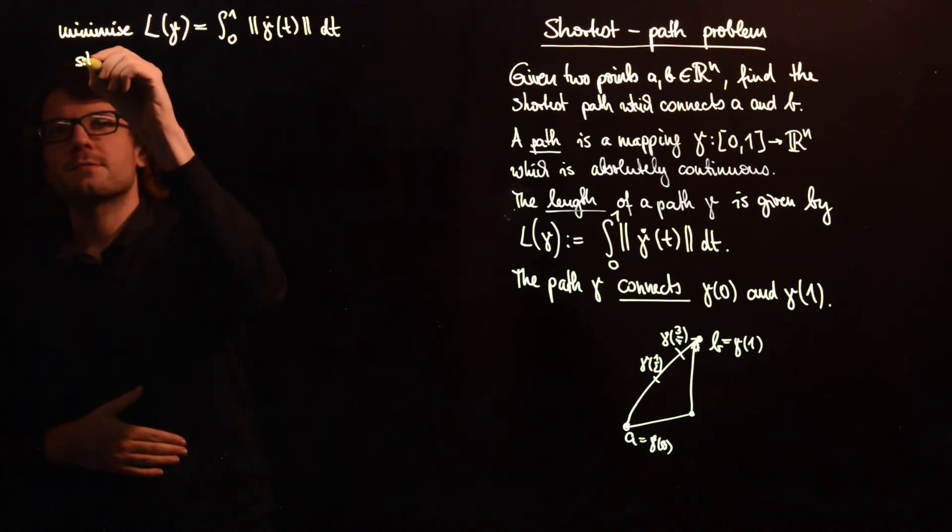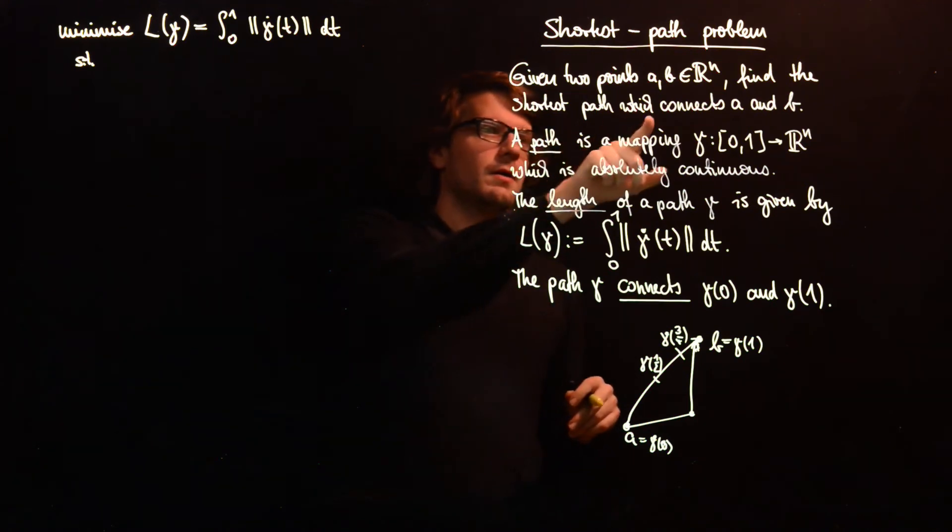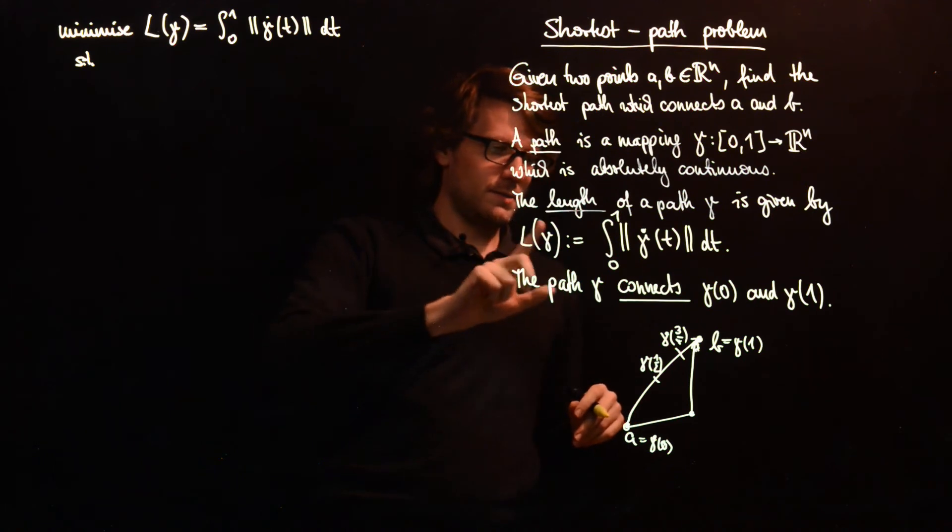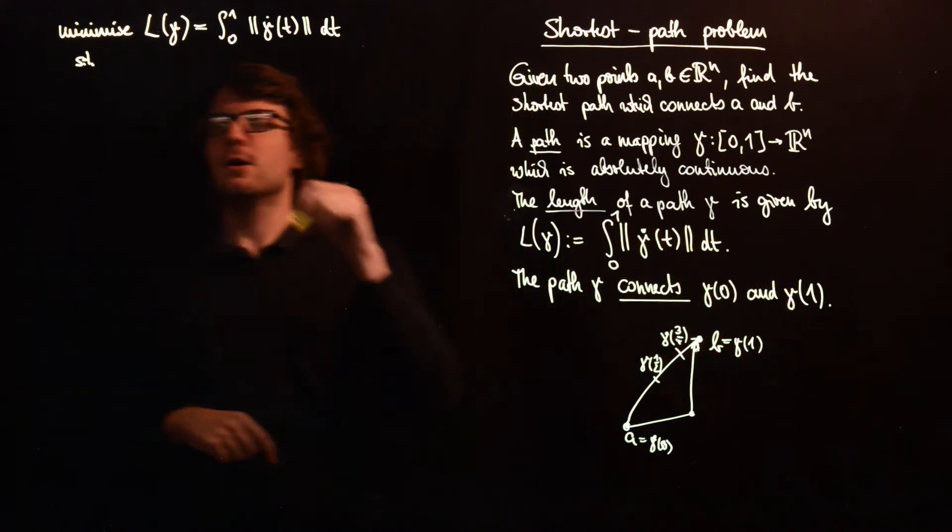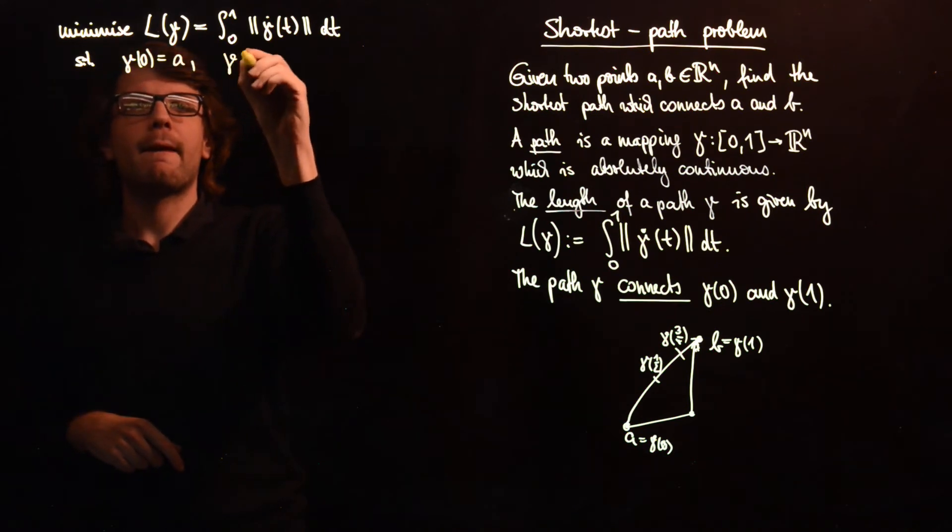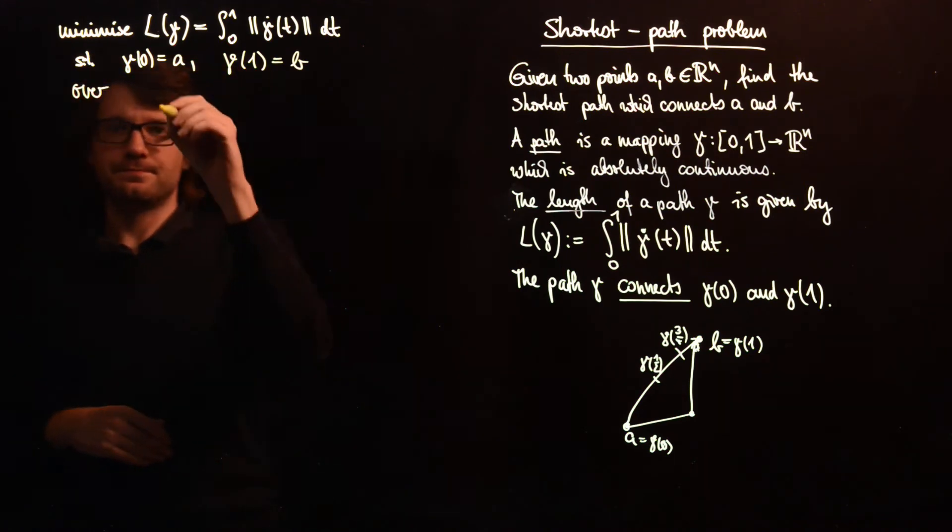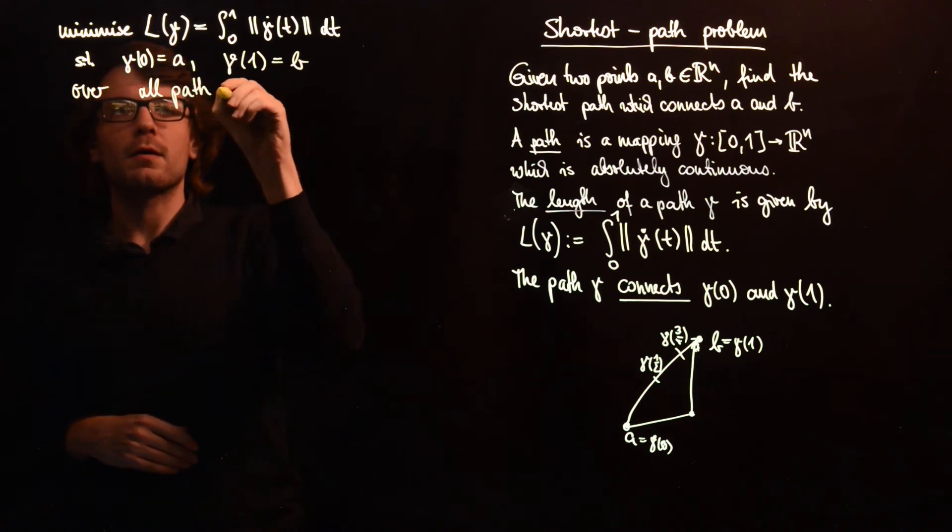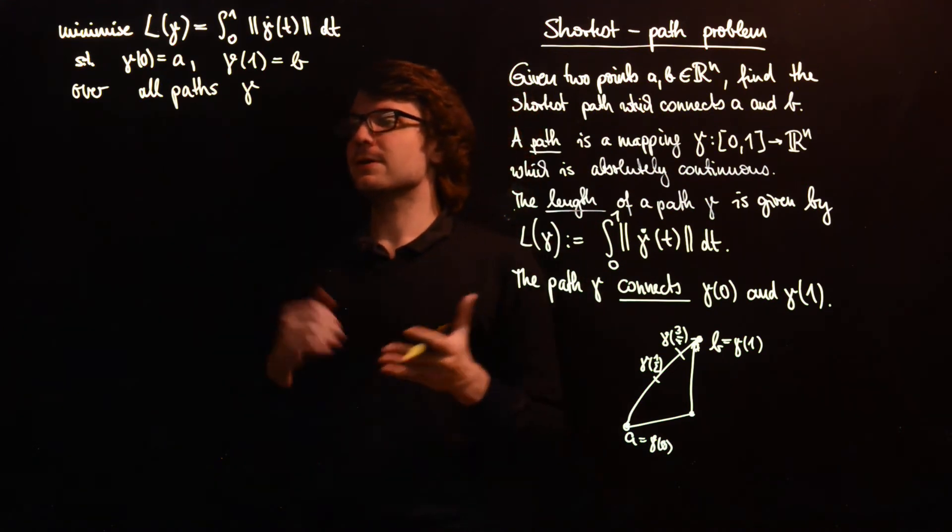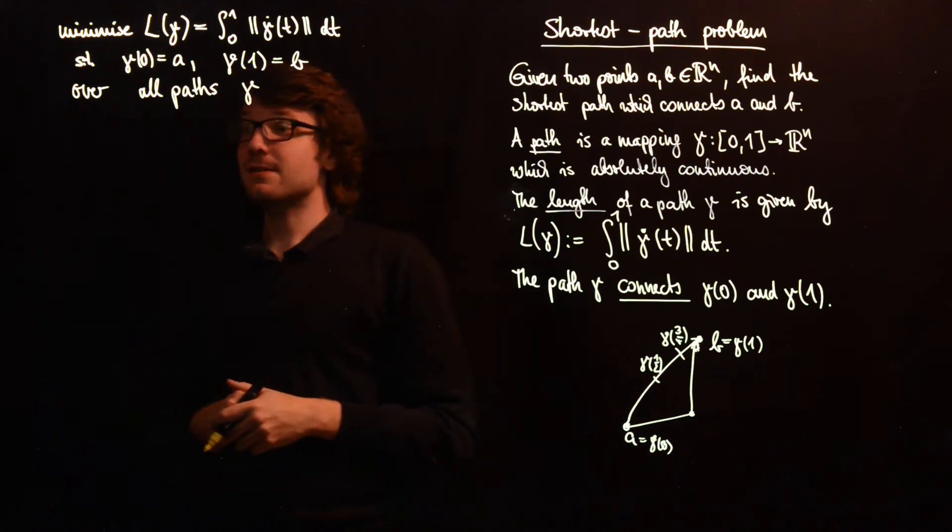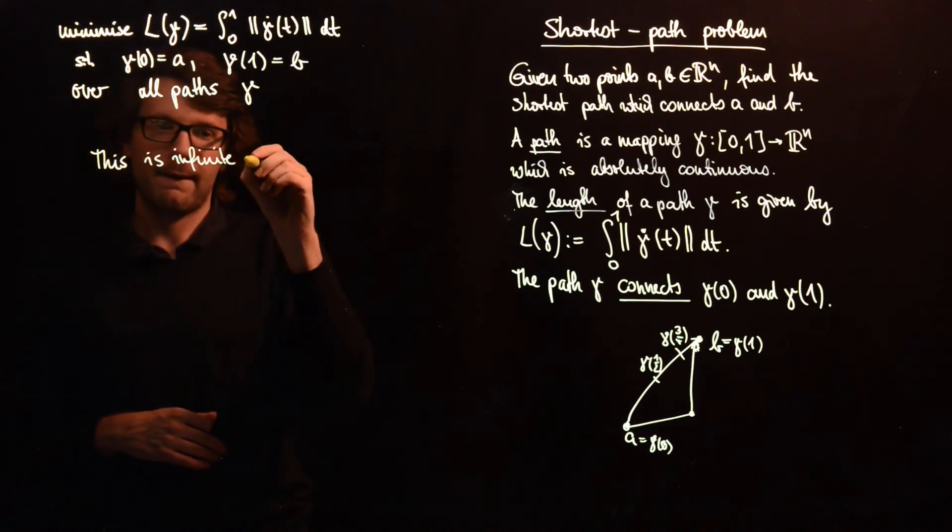And we have some constraints, and the constraints are given by connecting A and B, and this is here, so we have gamma of 0 should be A, and gamma of 1 should be B. And our variable is gamma, which is not very convenient for a computer, because that's infinite dimensional.